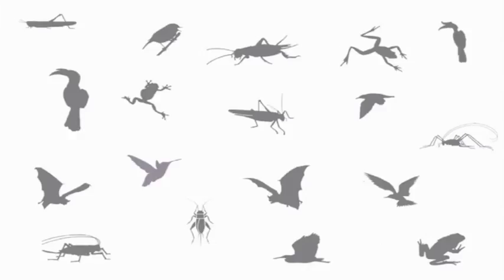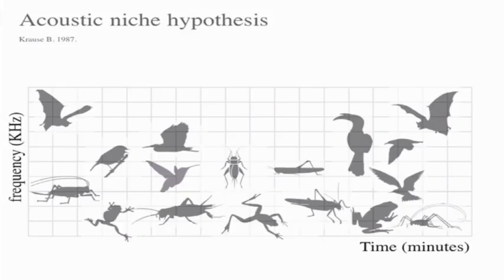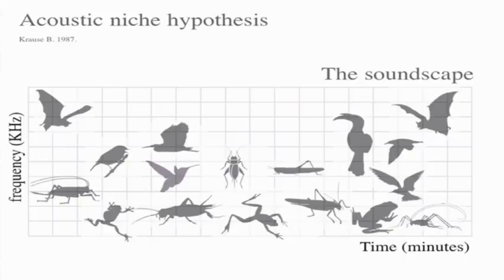Just as the food resources and the space in the rainforest are limited, so is the communication space. You can think about it in terms of time — if you and I talk at the same time, we won't know who's saying what. And in terms of frequency, if we talk at exactly the same pitch, we won't hear each other. So in the 1980s, Bernie Krauss proposed the acoustic niche hypothesis: animals have evolved to communicate at different frequencies and different times to occupy this communication space.